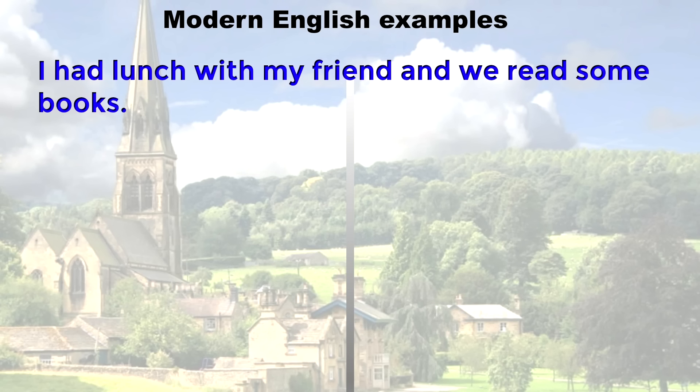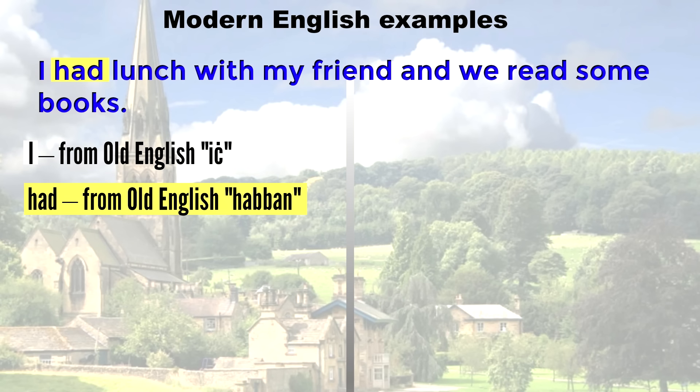But let's have a look at a more casual sentence, because I have a feeling that newspaper vocabulary tends toward Romance vocabulary more than common speech. I had lunch with my friend, and we read some books. I. This is Germanic. Comes from Old English ich. Had. This is also Germanic. It comes from Old English habban.